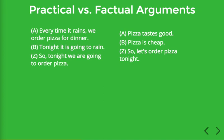The first argument is trying to show that something is true — that we are going to order pizza tonight — whereas the second argument is trying to show that a certain decision or course of action should be made on the basis of the evidence. So the first argument is concerned with matters of fact, whereas the second is concerned with a practical question, a matter of action.